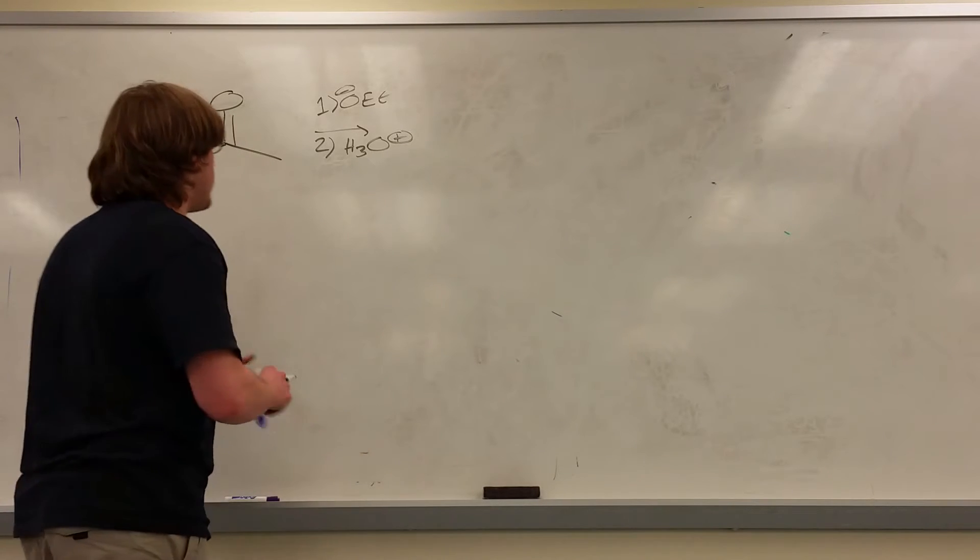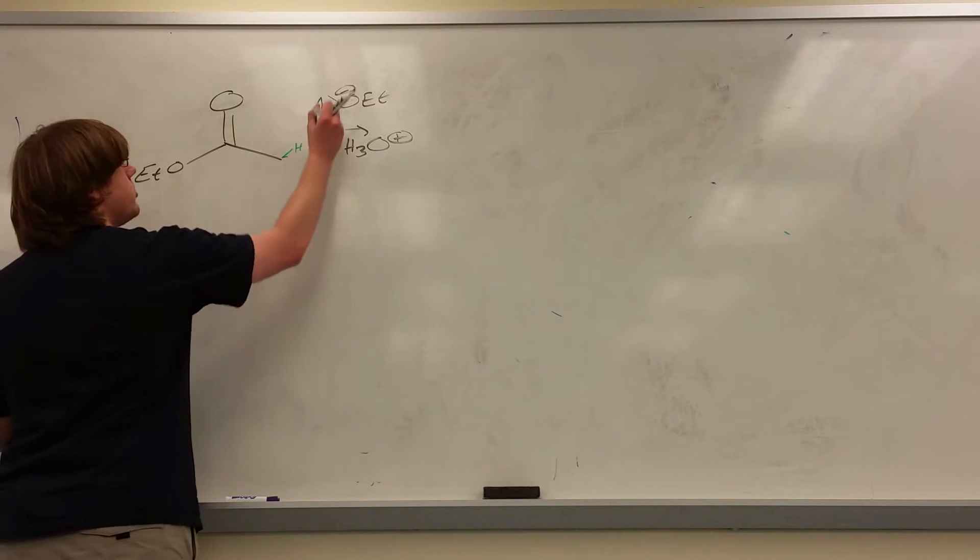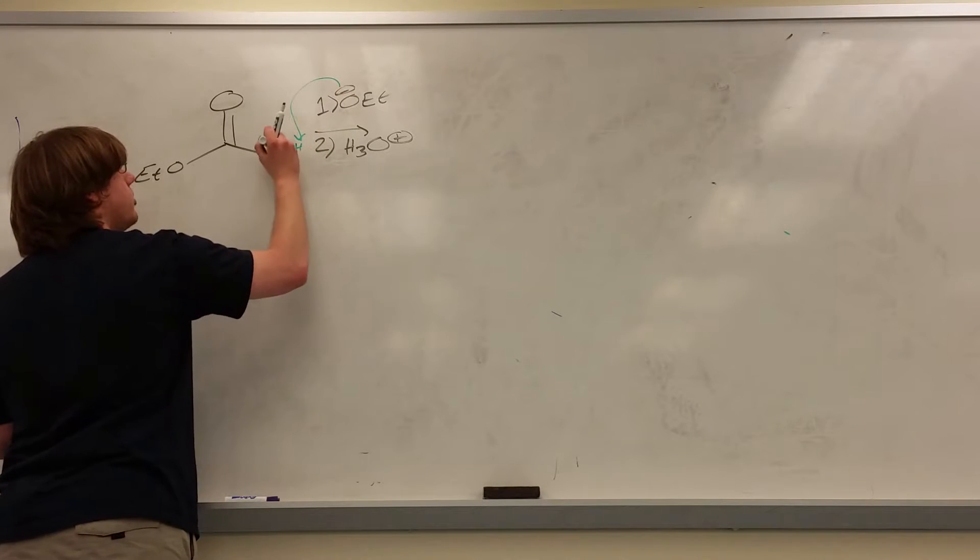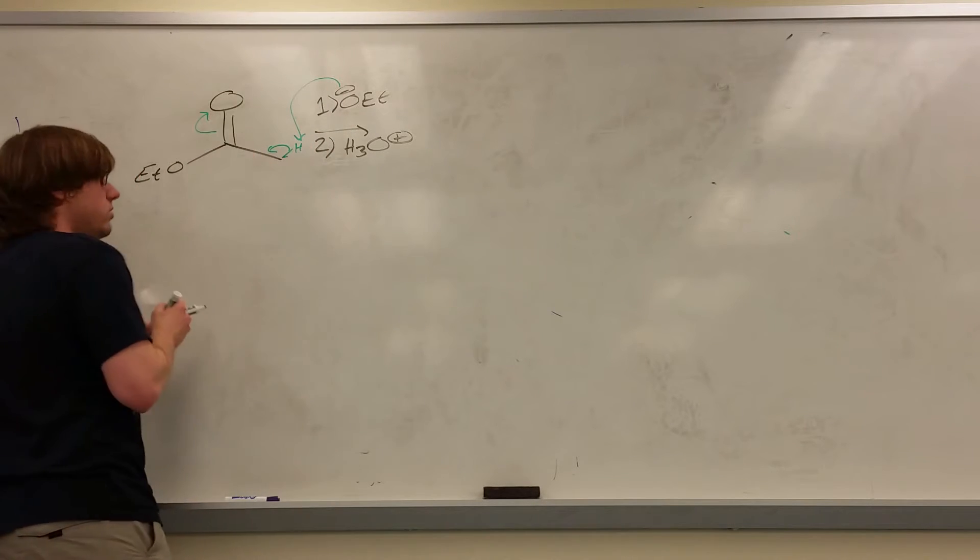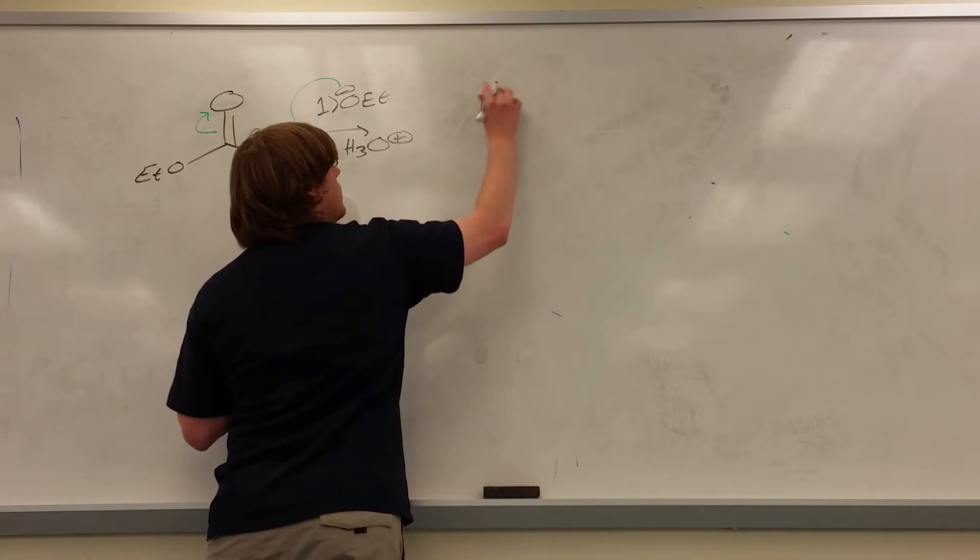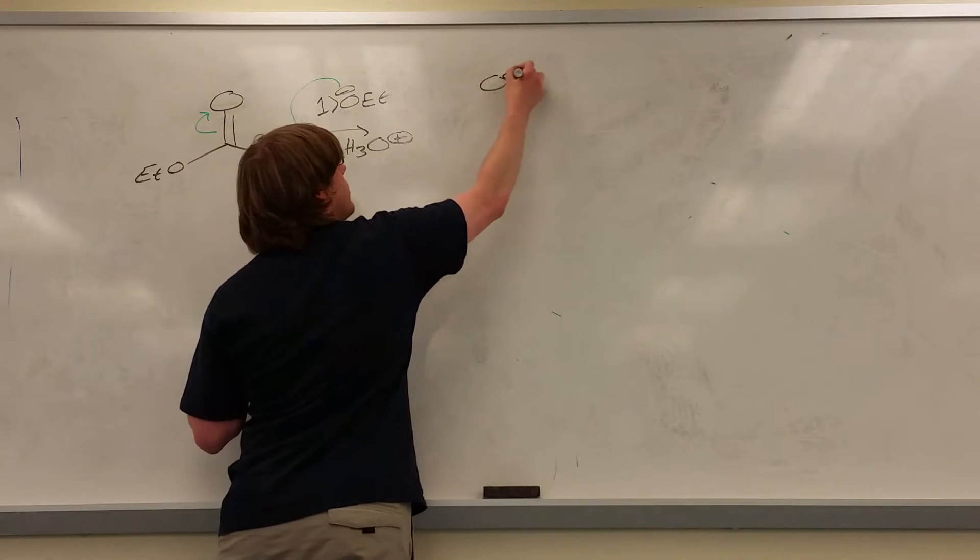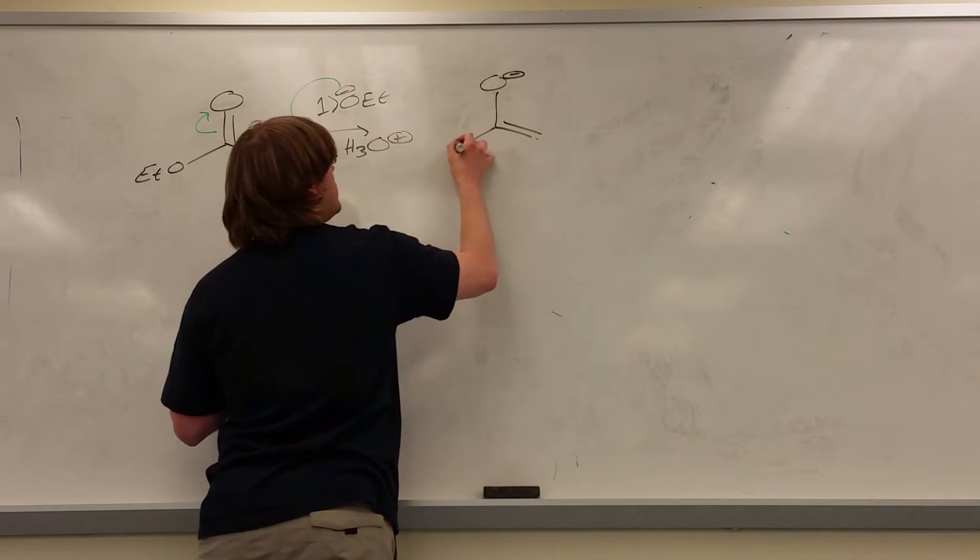The first step is nothing new. Base comes in, pulls off your only alpha proton available, forms an enolate, and you get O minus carbon-carbon double bond and your OET.